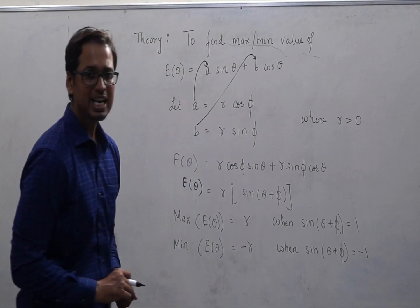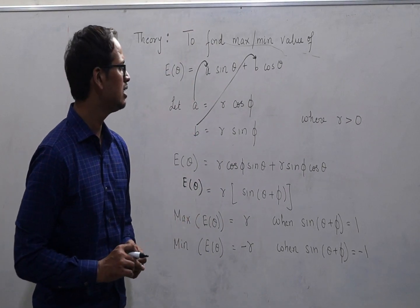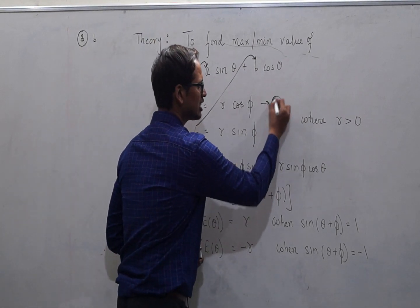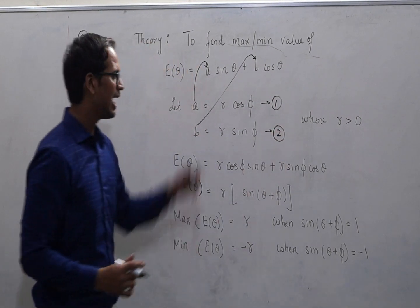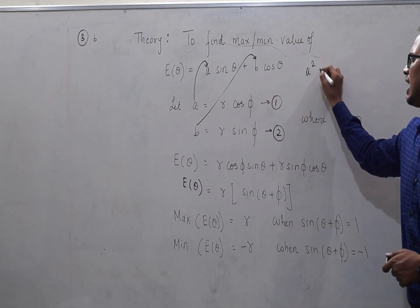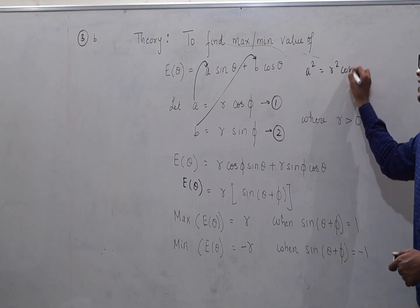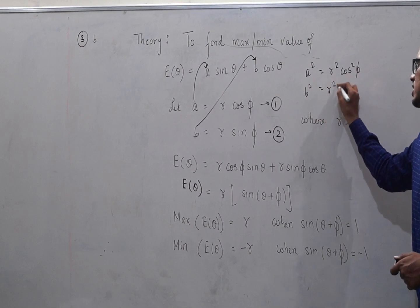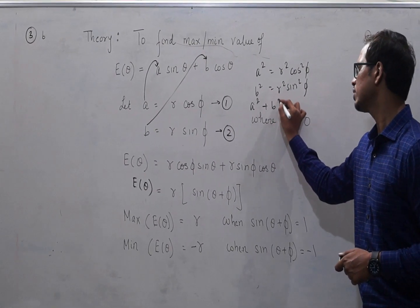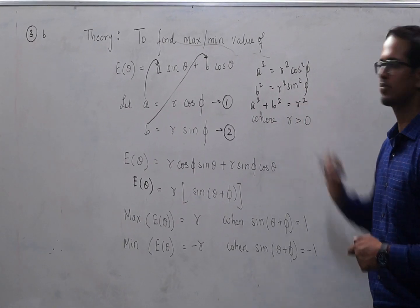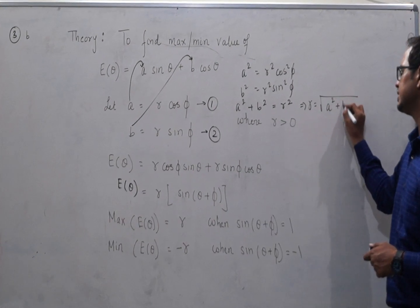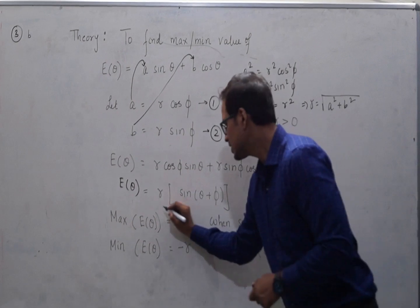Now, what is r here? Because there was no r in the question, I need to write my r in terms of a and b. Which is very simple to find out. If we take this expression, that is expression number 1 and 2 and square it and add them, I am doing a square as r square cos square phi and b square as r square sine square phi. And if I add them, I will get a square plus b square is equal to r square. Which implies, r will be nothing but under root of a square plus b square.